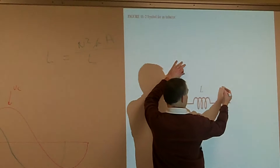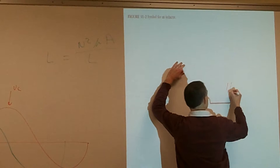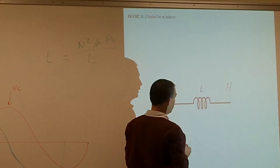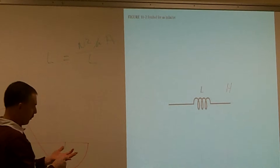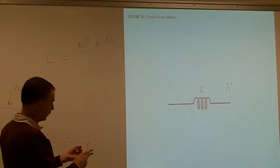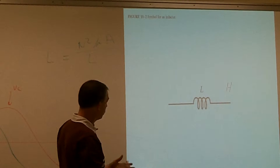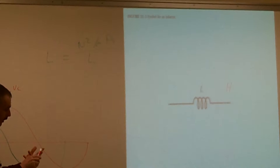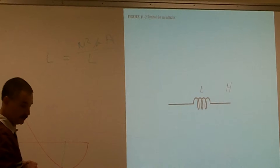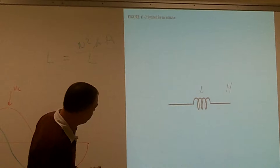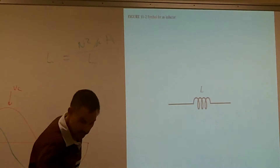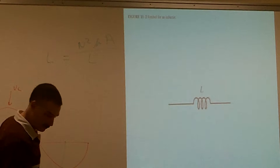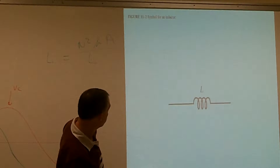Our units for inductance are going to be Henrys. Typically it's going to be micro-Henrys, milli-Henrys, or Henrys - those are the three main common ones. I don't think I've ever run across a Pico-Henry, but I suppose there could be a case out there. But typically they're going to be micro, milli, or Henrys.